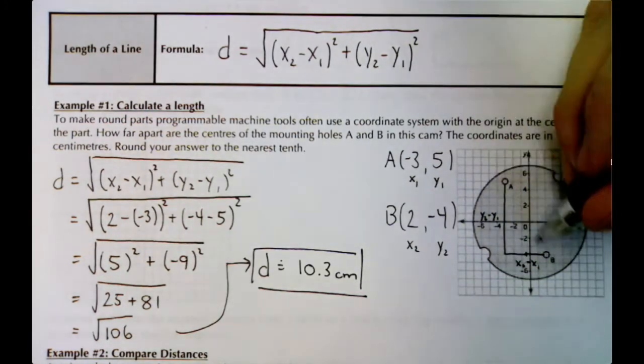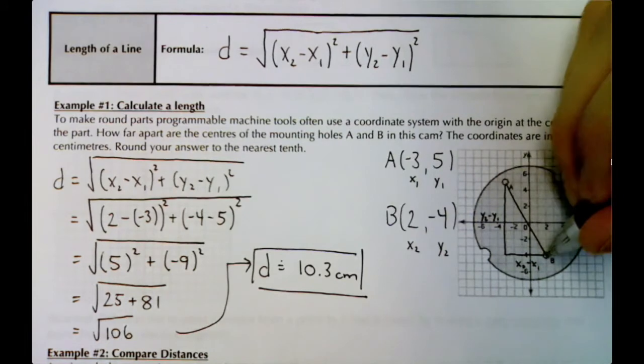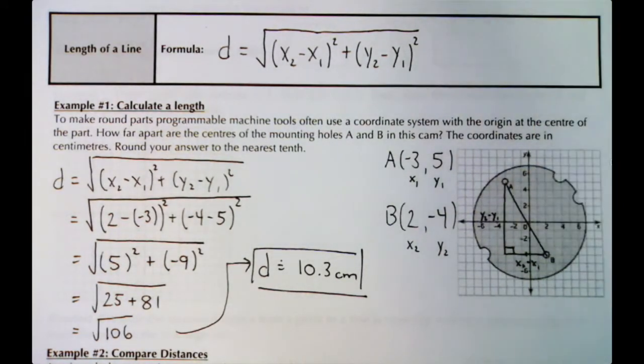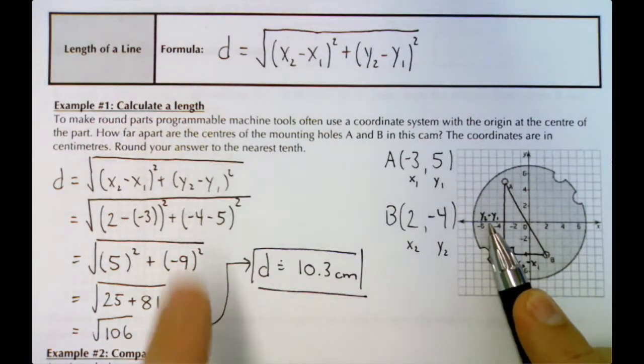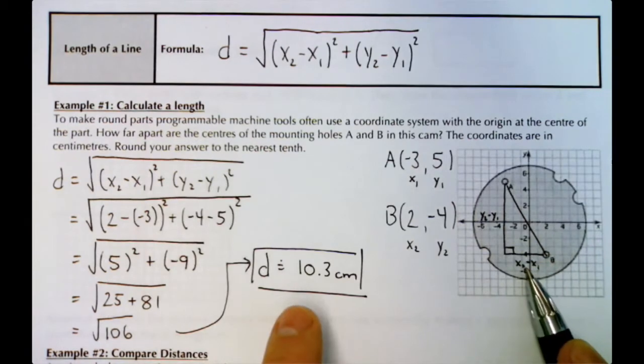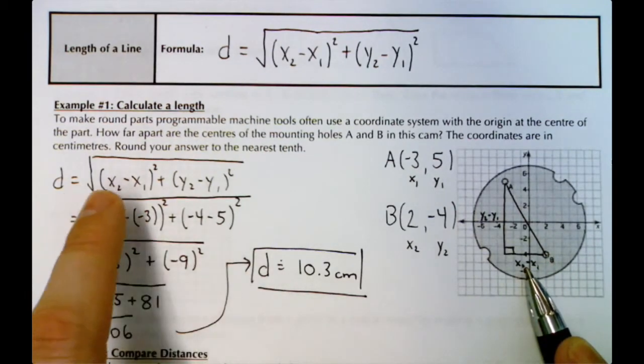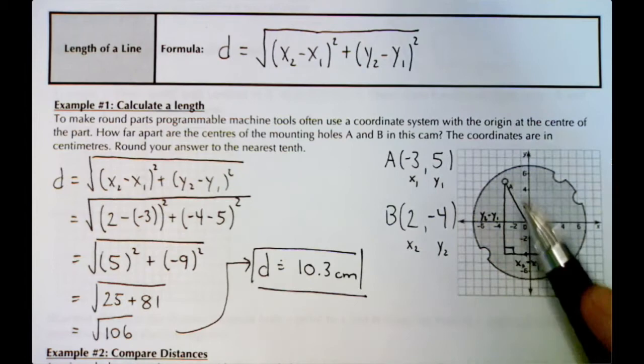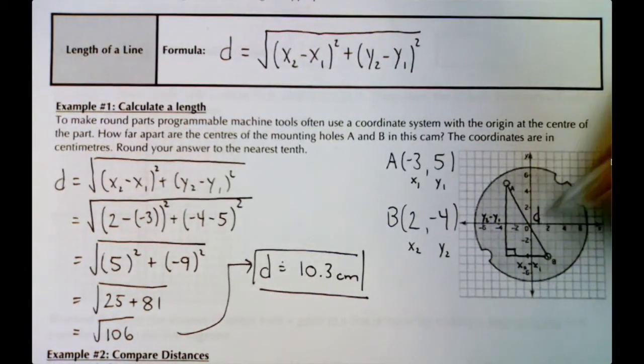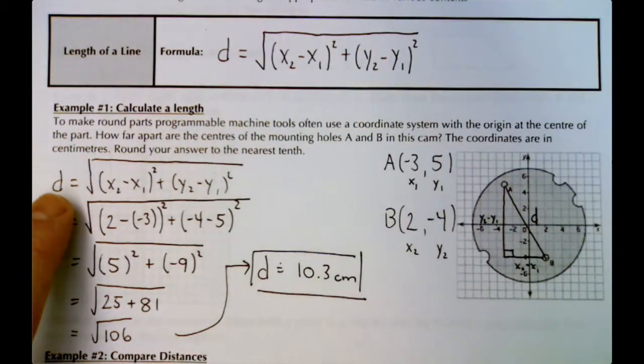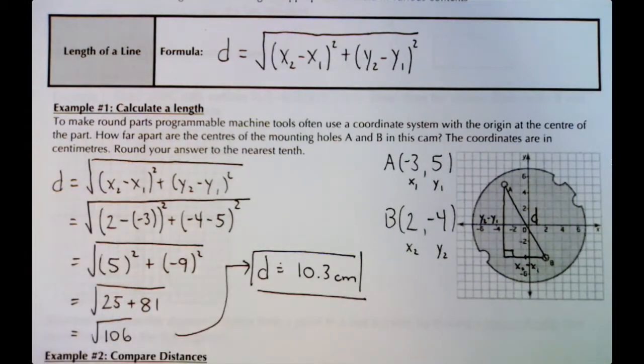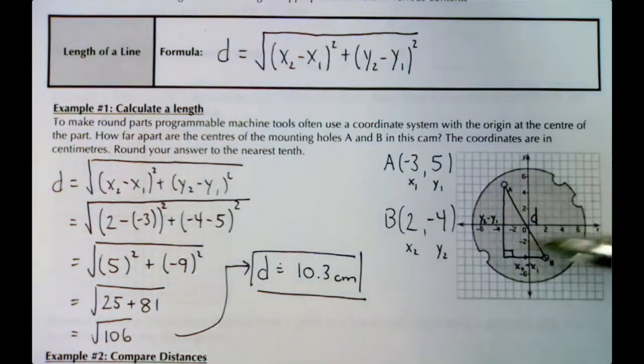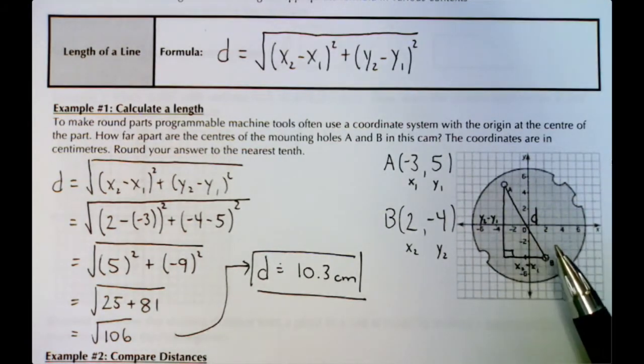If we complete the triangle, we're looking for this distance. That's a right angle triangle. If we remember Pythagorean theorem: a² (or y₂ - y₁)² plus b² (x₂ - x₁)² equals c². This c side is our distance. To get rid of the squared, d², we would square root. This is where the equation comes from.